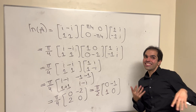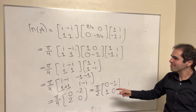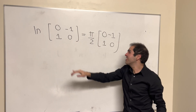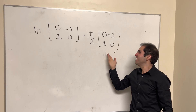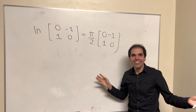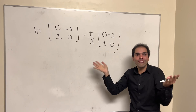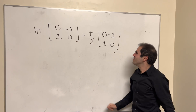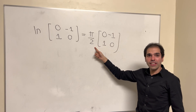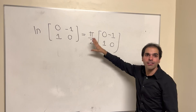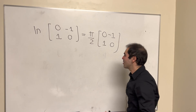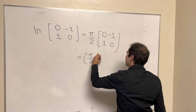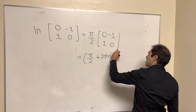So in summary, ln of rotation by 90 degrees becomes rotation by 90 degrees times a scaling of π/2. How crazy is that? It's almost like we have an eigenvector. And if you do the general logs instead of the principal log, you add 2πm times this matrix.